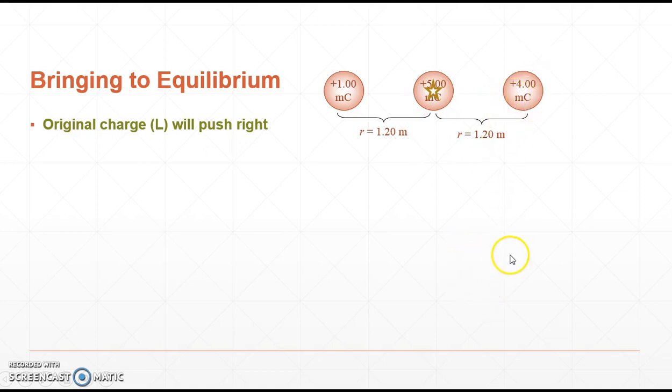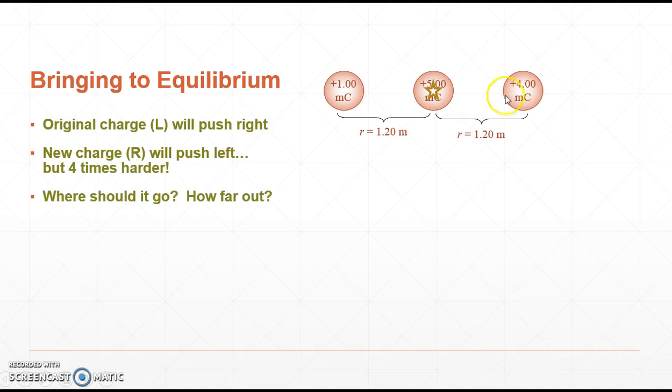Now, we're going to put this four down, and that's going to push left, but if we put it over here, it'll push four times harder. Four forces minus one force is going to make a net force of three forces, and this charge isn't going to be in equilibrium. We need to move this four where? Further in? Further out? Well, if we move it further in, inverse square law says the force will get stronger. We want to move it further out so the force will get weaker.